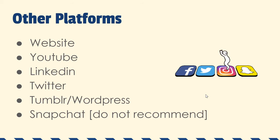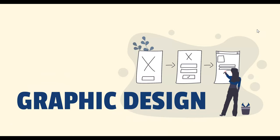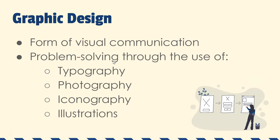Thanks for listening to the social media spiel — handing it off to Garrett to talk about graphics. Graphic design is a form of visual communication made up of four main parts: typography, which is the text; photography, your images; iconography, which is symbols and different types of logos; and illustrations, your drawings. A lot of what graphic design deals with is problem solving, used in advertising for events and in different ways.